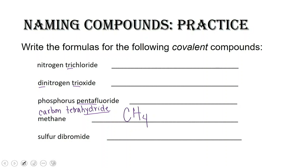The first one is nitrogen trichloride. 'Nitrogen' with no prefix means one nitrogen atom — no subscript. 'Trichloride' — chloride is the name for chlorine in a compound, and the prefix 'tri' means three — so we write Cl3. The formula is NCl3.